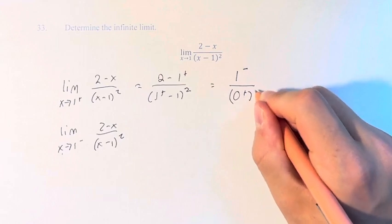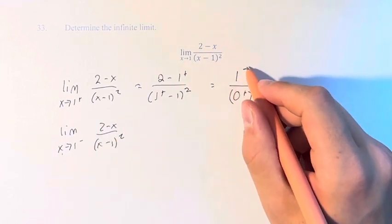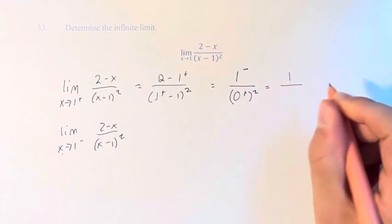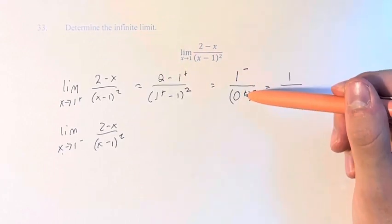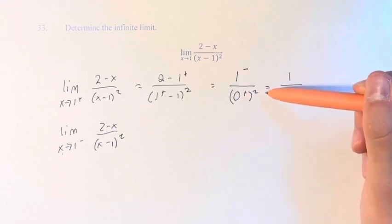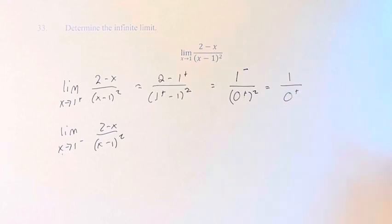And this is, of course, squared. 1 from the left doesn't really matter, it's just 1, and 0 from the right squared. Well, this is a positive number, so squaring it doesn't do anything. We're still approaching 0 from the right.